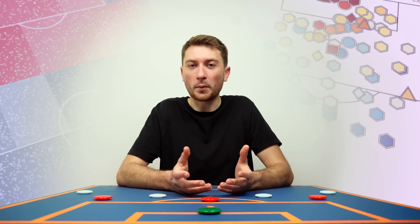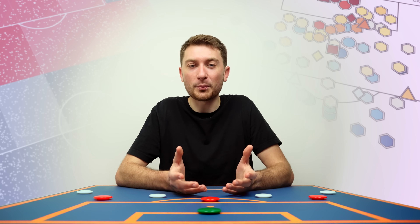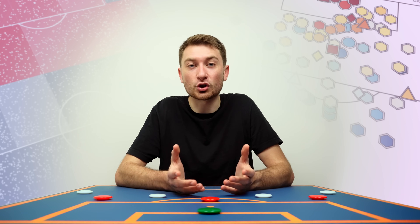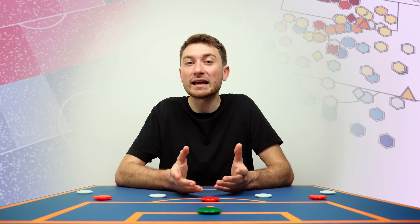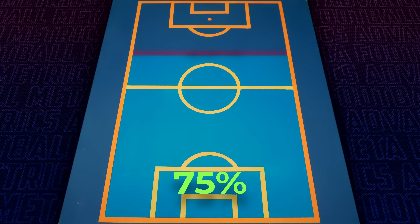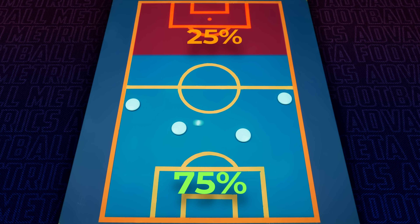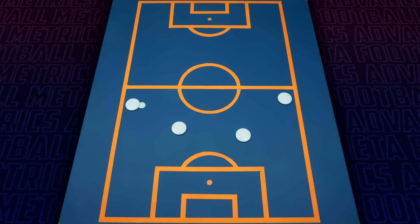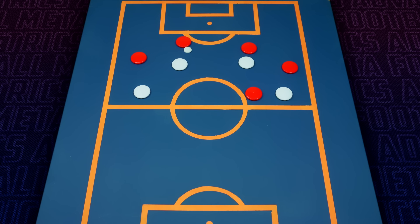However, the main issue with possession is that it gives you no indication of how a team played when they had the ball. A team could end the match with 75% possession simply by circulating the ball around the back line with very little attacking threat, while another team could swiftly counterattack and win the game with few chances and limited possession.